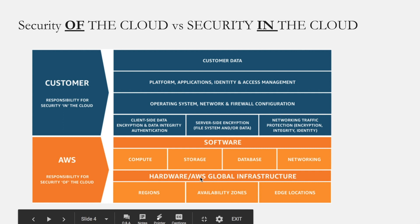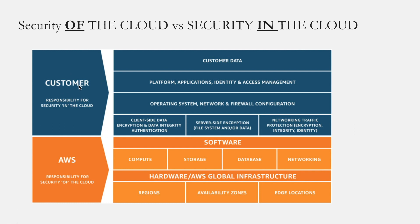Security of the cloud means that AWS is responsible for setting up the regions, availability zones, edge locations, hardware, and global infrastructure, as well as compute, storage, database, and networking services, and the software that powers these services. On the top, the blue section says customer, and the customer is responsible for security in the cloud. The customer is responsible for things like client-side data encryption and data integrity authentication, server-side encryption, and networking traffic protection.